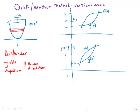So if the axis of rotation is horizontal, as we've been considering in many of the previous videos, then the variable of integration will be x, which is a horizontal variable. But if the axis of rotation is vertical and we're going to use this method, then the variable of integration has to be y.